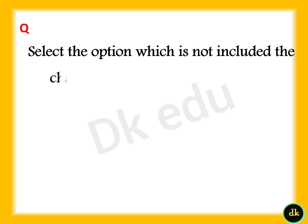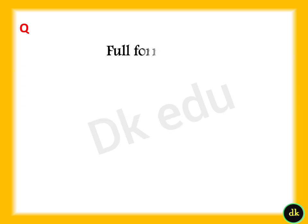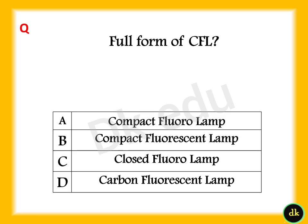Select the option which is not included in the characteristics of organic fertilizers. Answer: Option A, Excess use destroys soil structure. Full form of CFL — Answer: Option B, Compact Fluorescent Lamp.